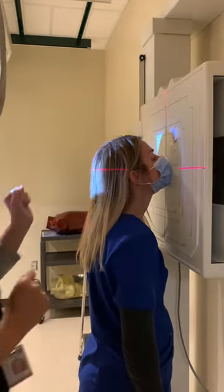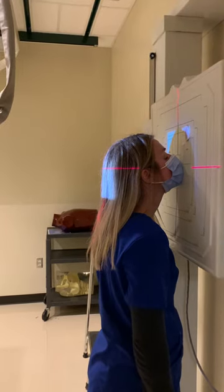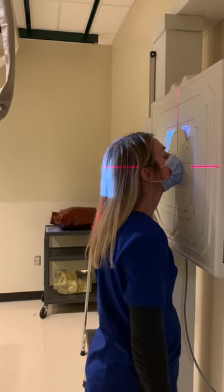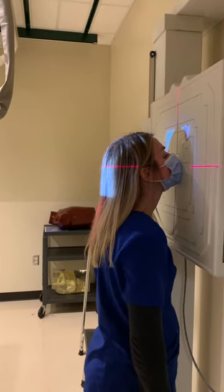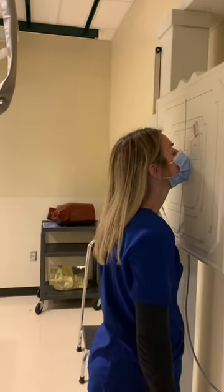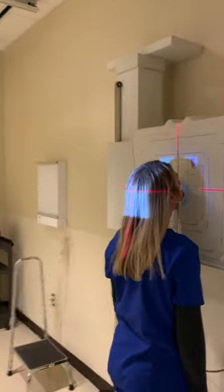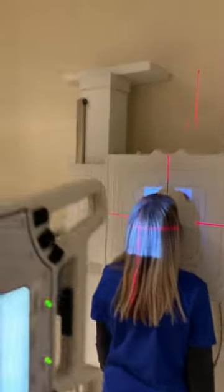We're going to adjust our collimation to approximately 8 by 10. We are putting a marker on the right side of the body. We're at 40 inches SID, and no shielding is required for these.